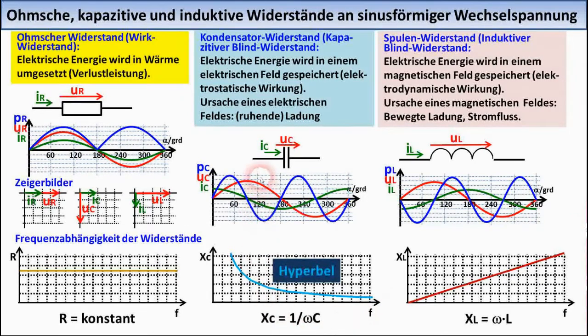As here for example. On average over time, the power with an ideal coil or an ideal capacitor, that is, coil and capacitor without losses, is zero.